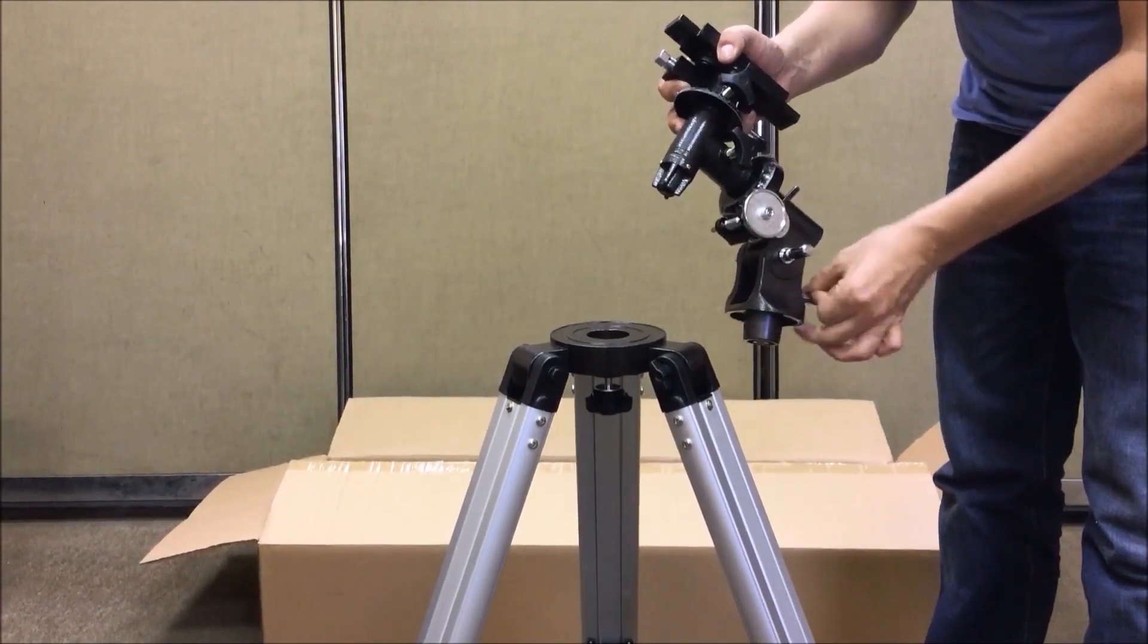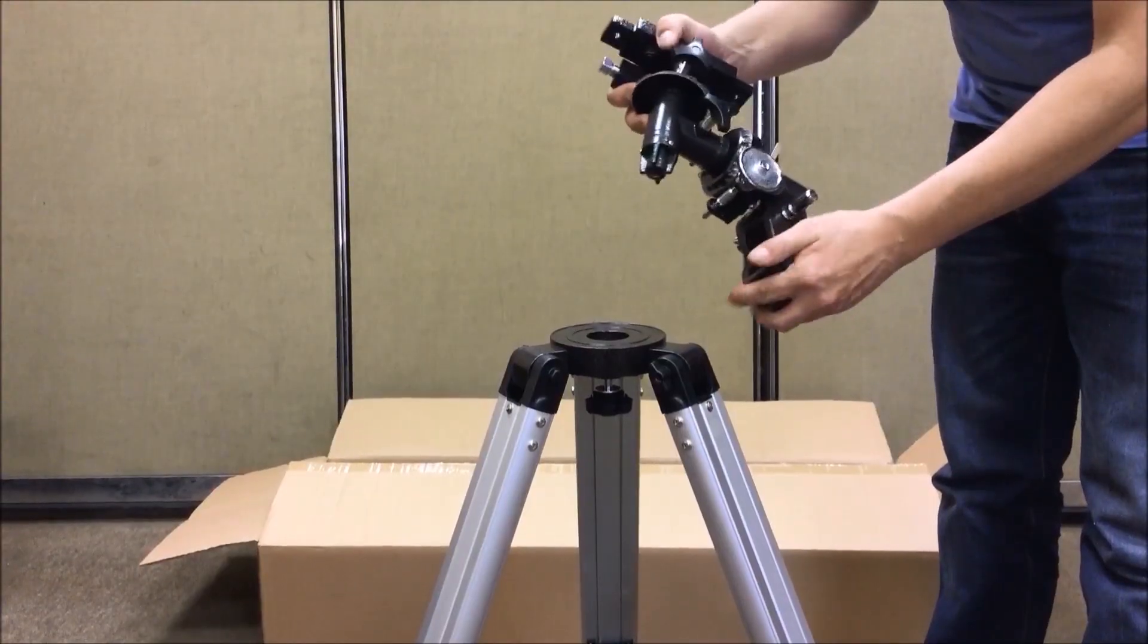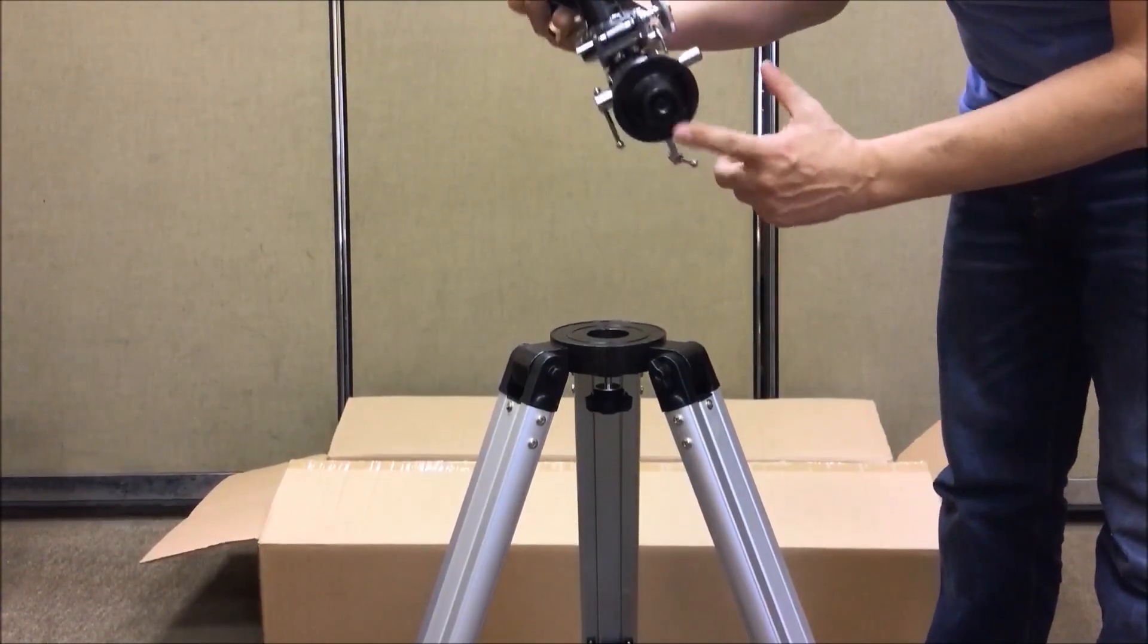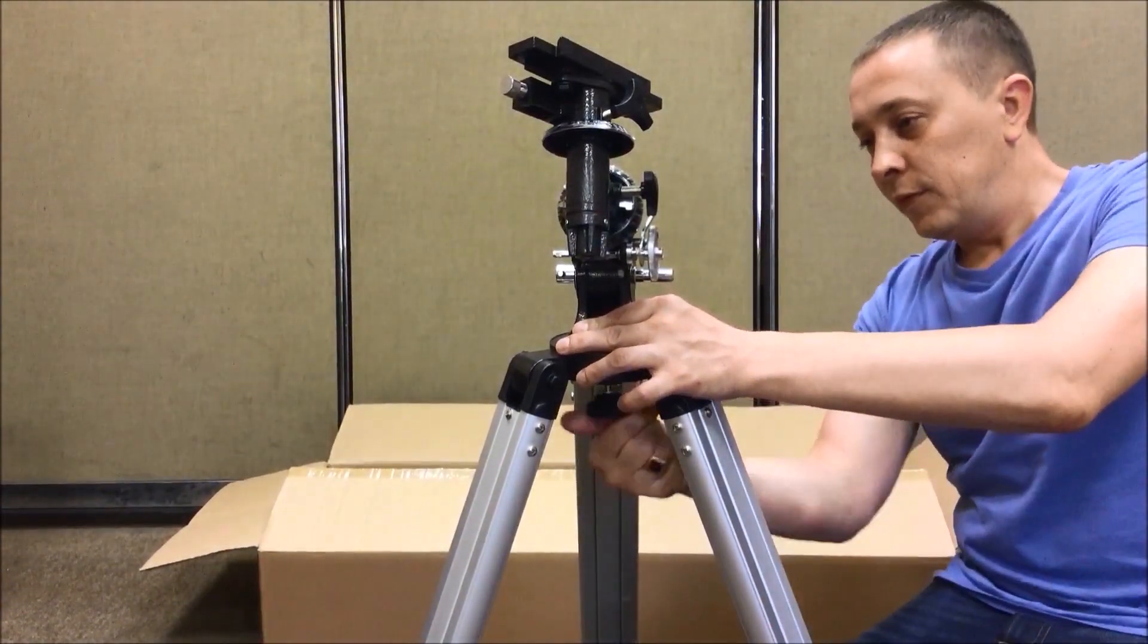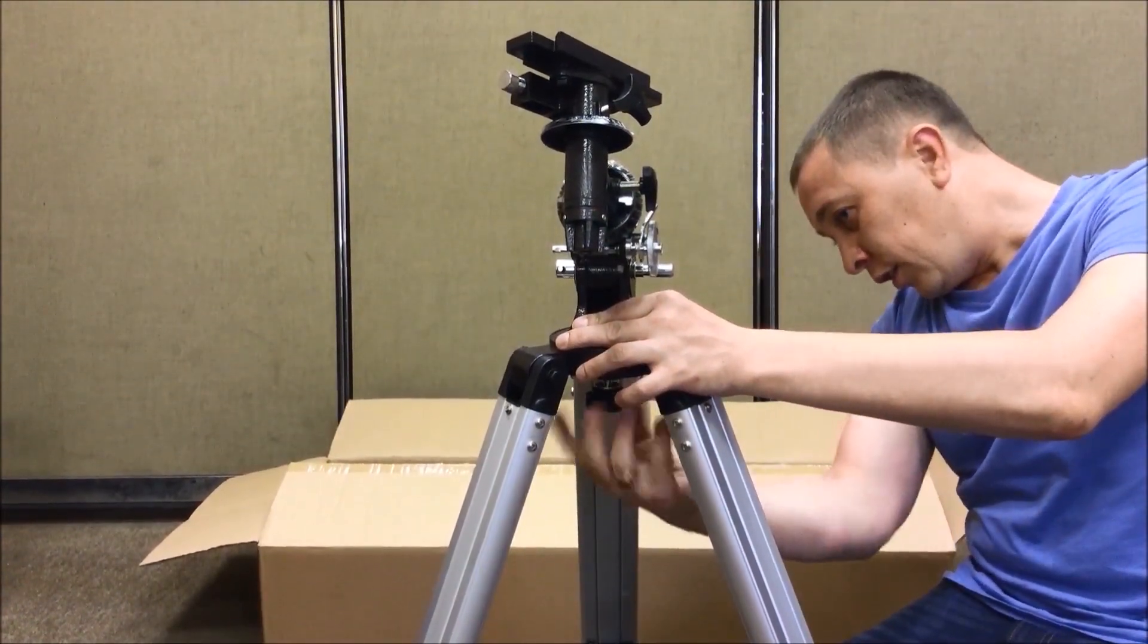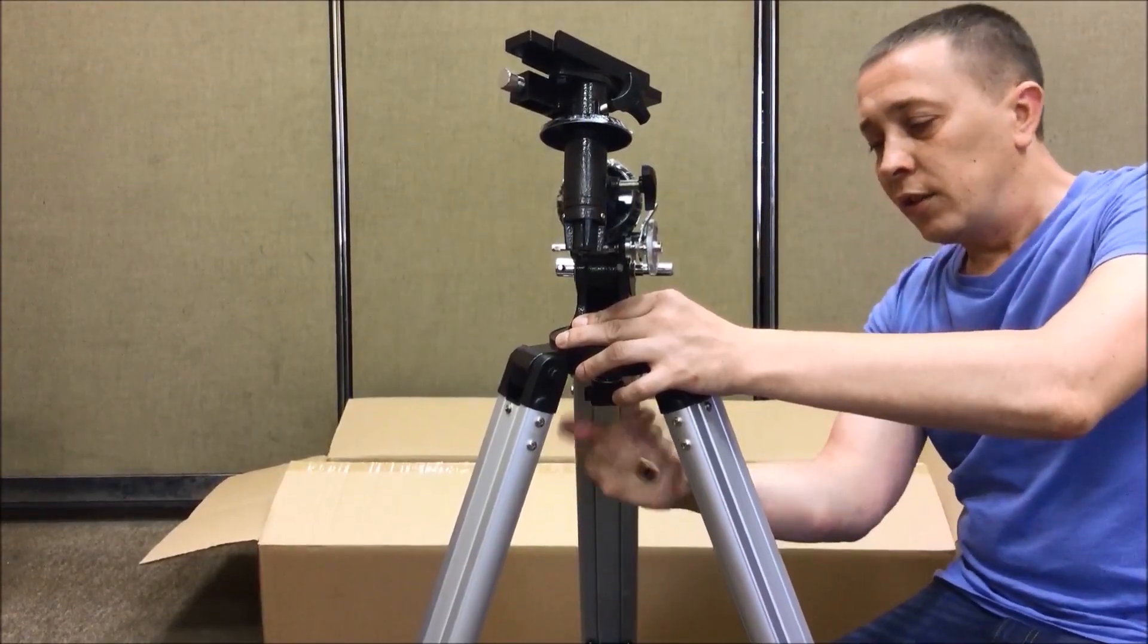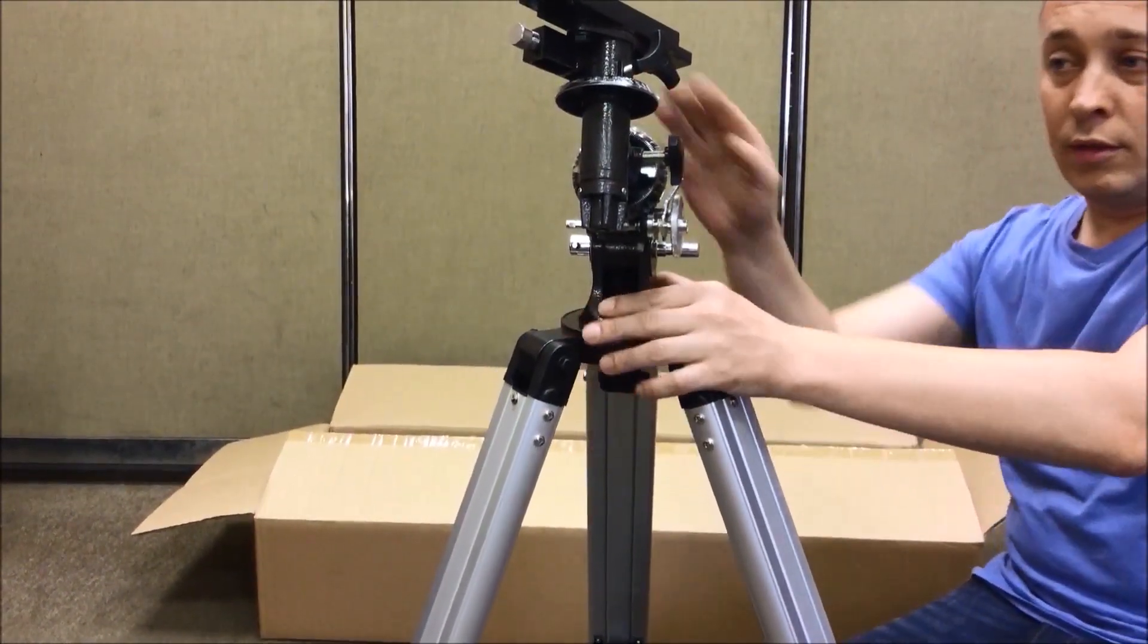The mount is installed on the tripod very easily. The mount has a thread here and the tripod has a threaded knob there. You just sit the mount on the tripod and tighten the knob. The knob goes in easily. Rotate it clockwise until it stops.